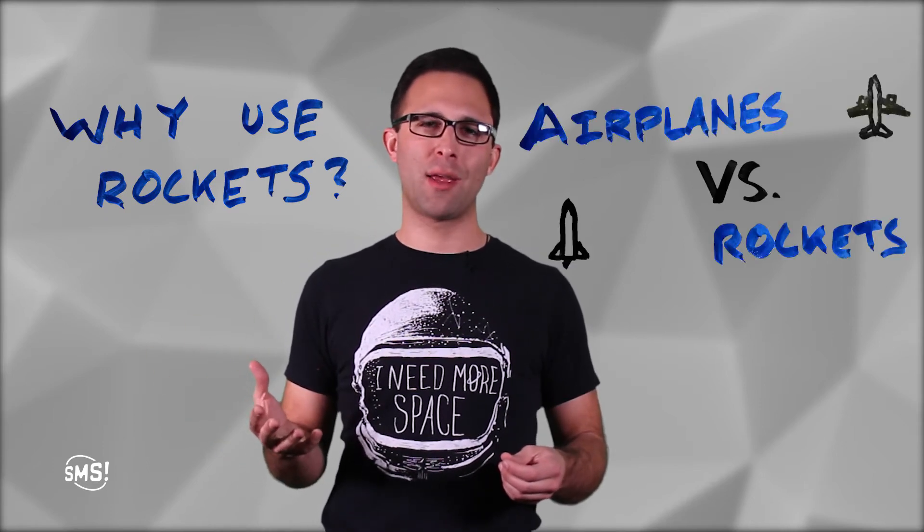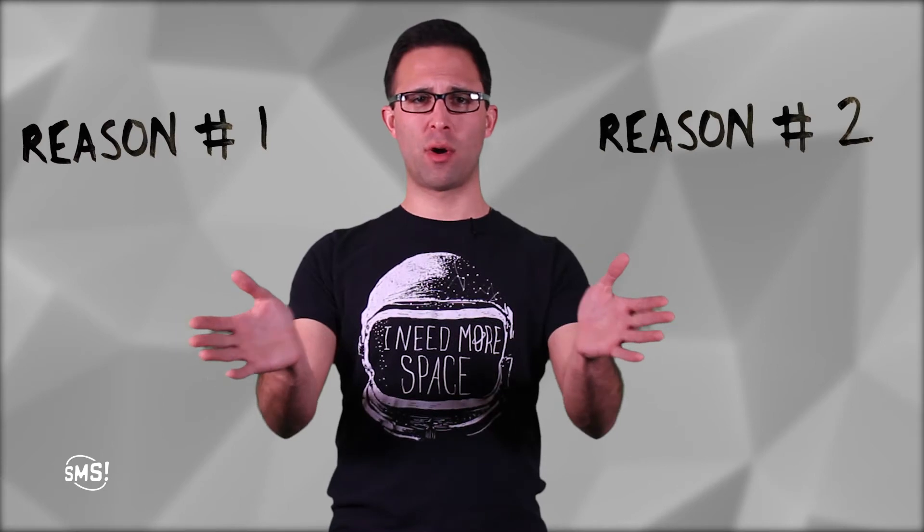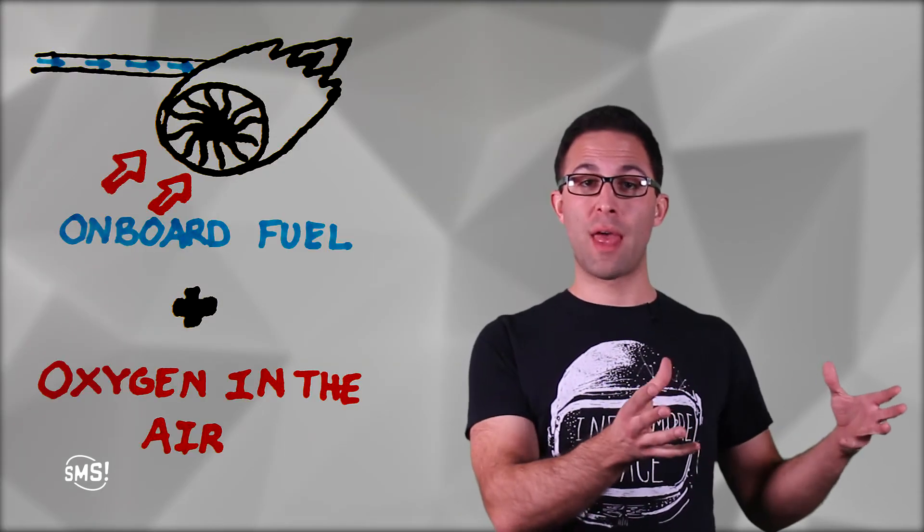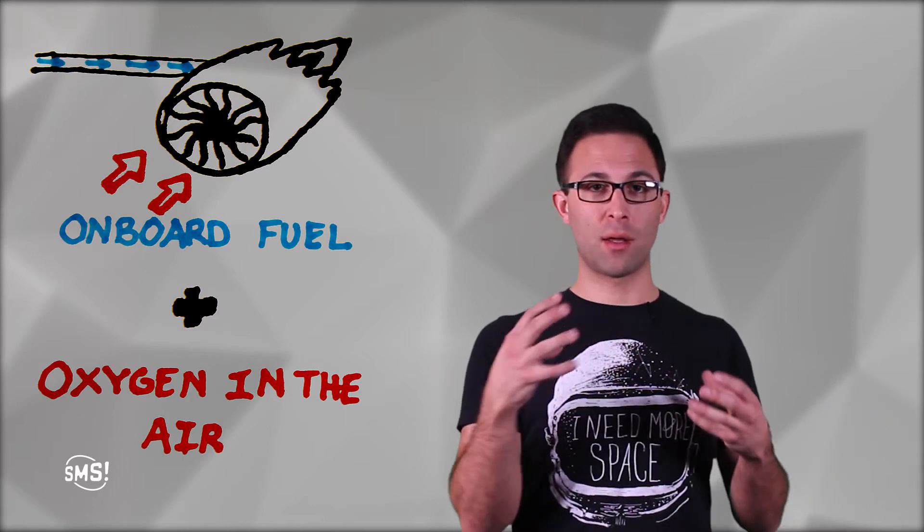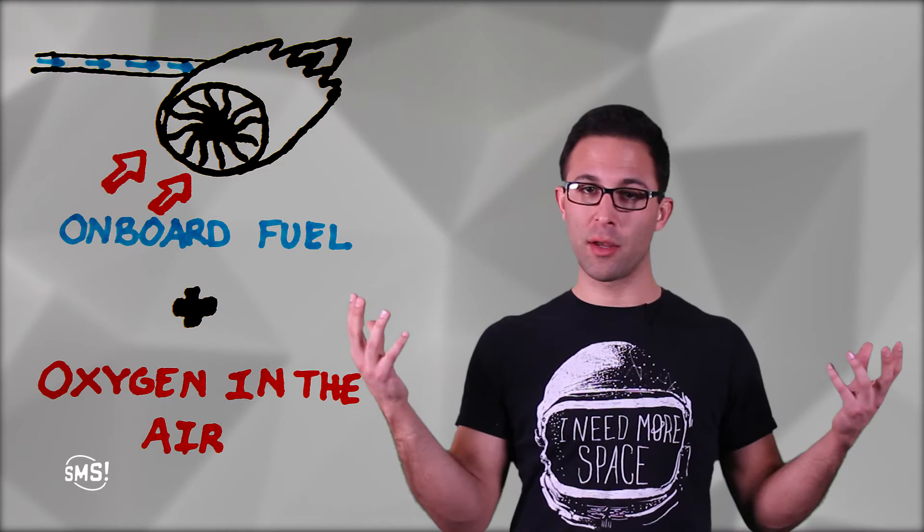But before we can talk more about rockets, we should probably talk about why we're not just using airplanes to go to space. There are two different reasons that we're not using airplanes to get to space. First of all, it has a little bit to do with the engines. Jet engines, what they do is the airplane has the fuel for that jet engine. The oxygen that it needs comes from the atmosphere. It sucks in air, then it combines it with the fuel plus the heat. There you go, combustion.